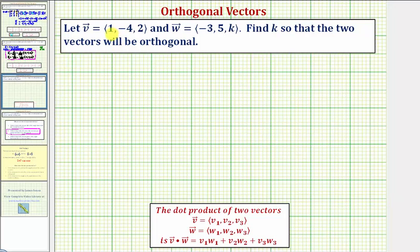We're given that vector v has components (1, -4, 2) and vector w has components (-3, 5, k). Notice how the z component of vector w is unknown. We're asked to find k so that the two vectors will be orthogonal or perpendicular.